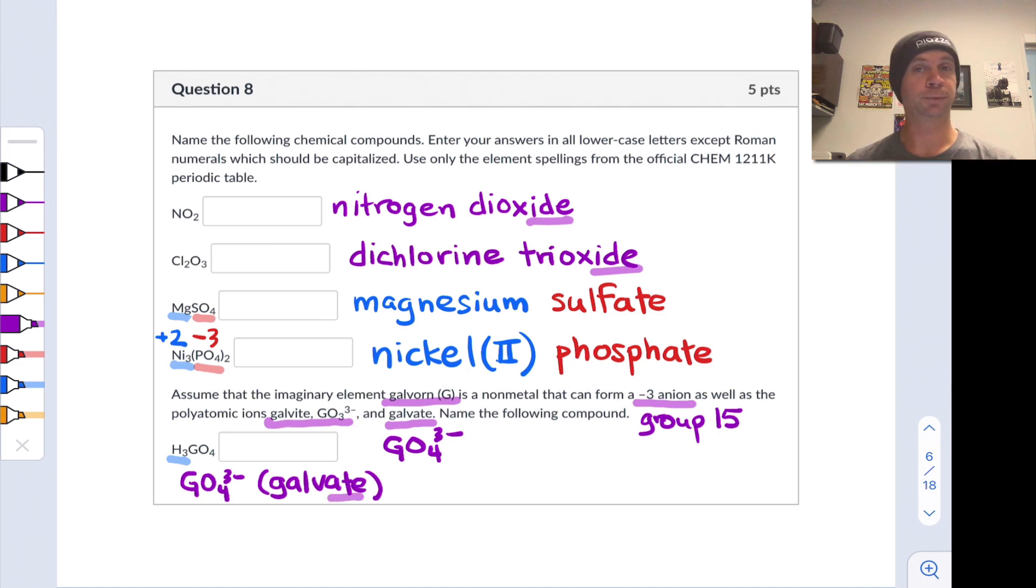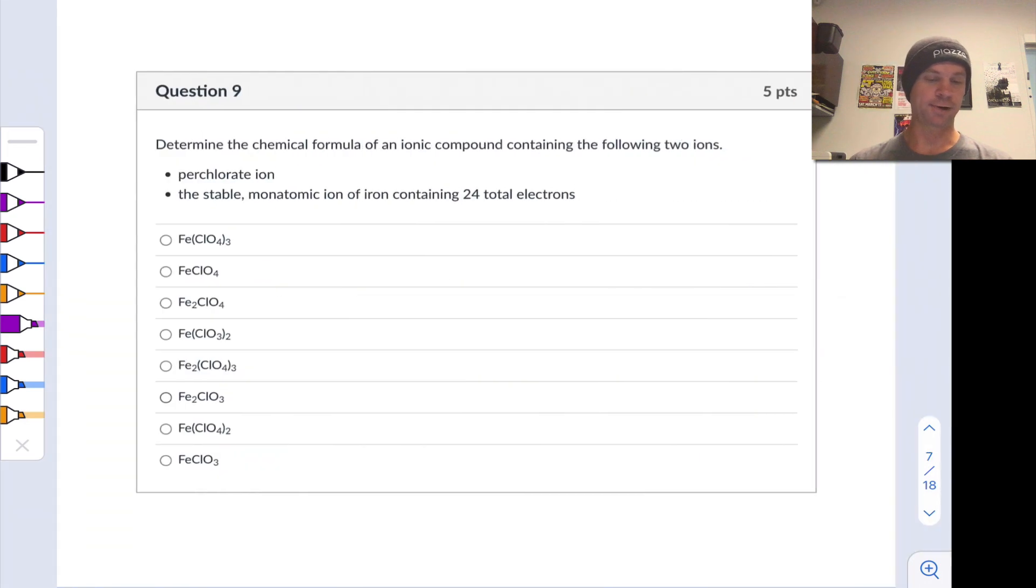This is done, for example, with nitrate and nitric acid. Sulfate and sulfuric acid is another related example. And so the name of this compound, H3GO4, is going to be galvic acid, where the ic acid suffix comes from the fact that this acid is derived from an ate anion. Alright, let's move on to question nine.